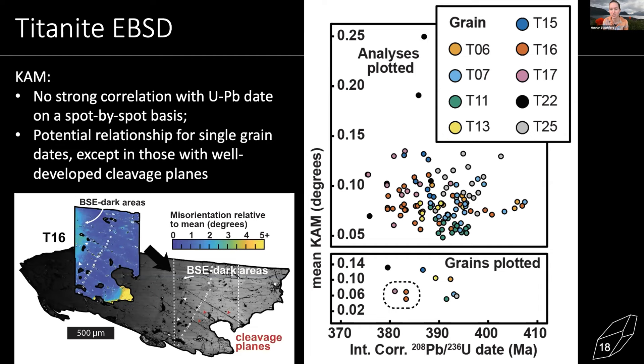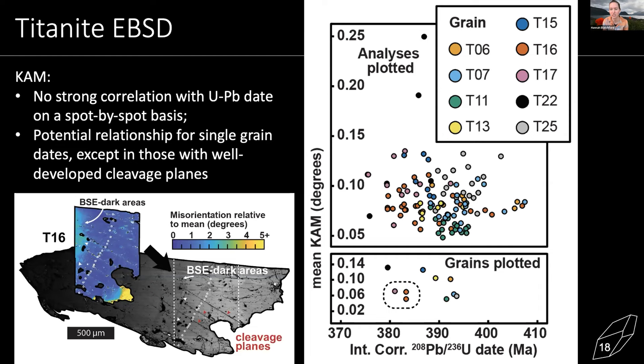Then the EBSD: we mapped a sizable subset of the grains and found a shape preferred orientation consistent with the high strain zone geometry. Looking at misorientation axes plotted in both the sample reference frame and crystallographic reference frame, there are stronger patterns generally in the more deformed grains. The euhedral grains with simple growth twins preserved show less, but as you develop recrystallization and sub-grain boundaries, there's a stronger development of misorientation axes. In the most deformed grain — T22 — there's a pretty well-defined maxima in misorientation around the 1-0-1 direction. On an analysis-by-analysis basis, correlating laser ablation data with kernel average misorientation, there is generally a trend between single grain dates and KAM values, though it's a little messy with a small n.